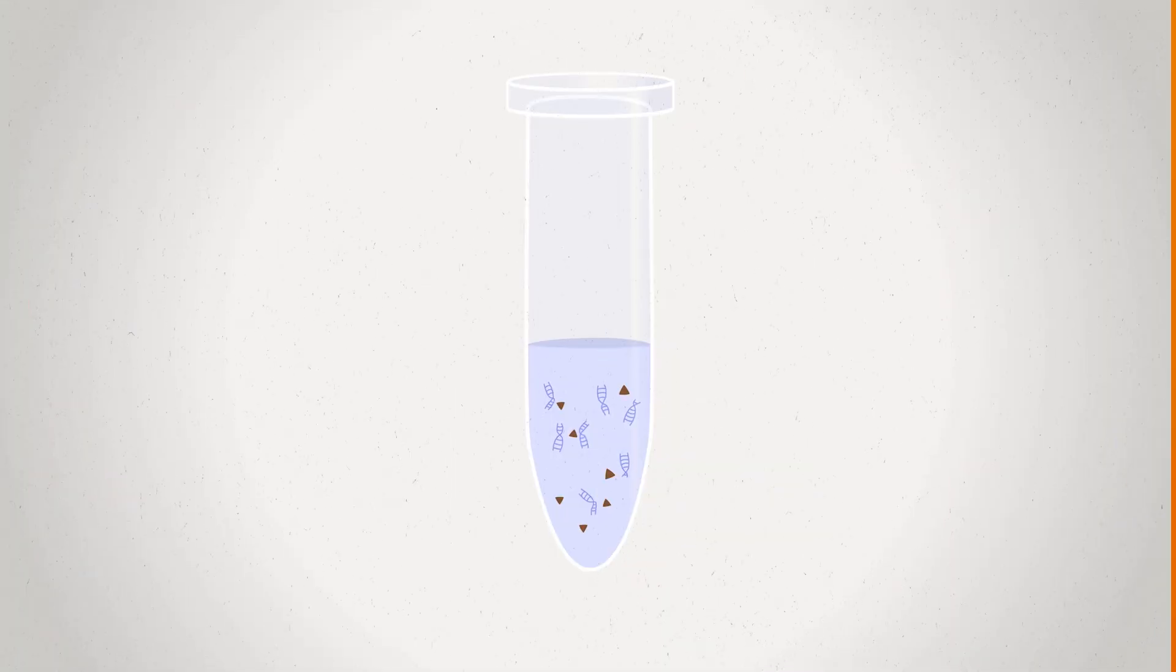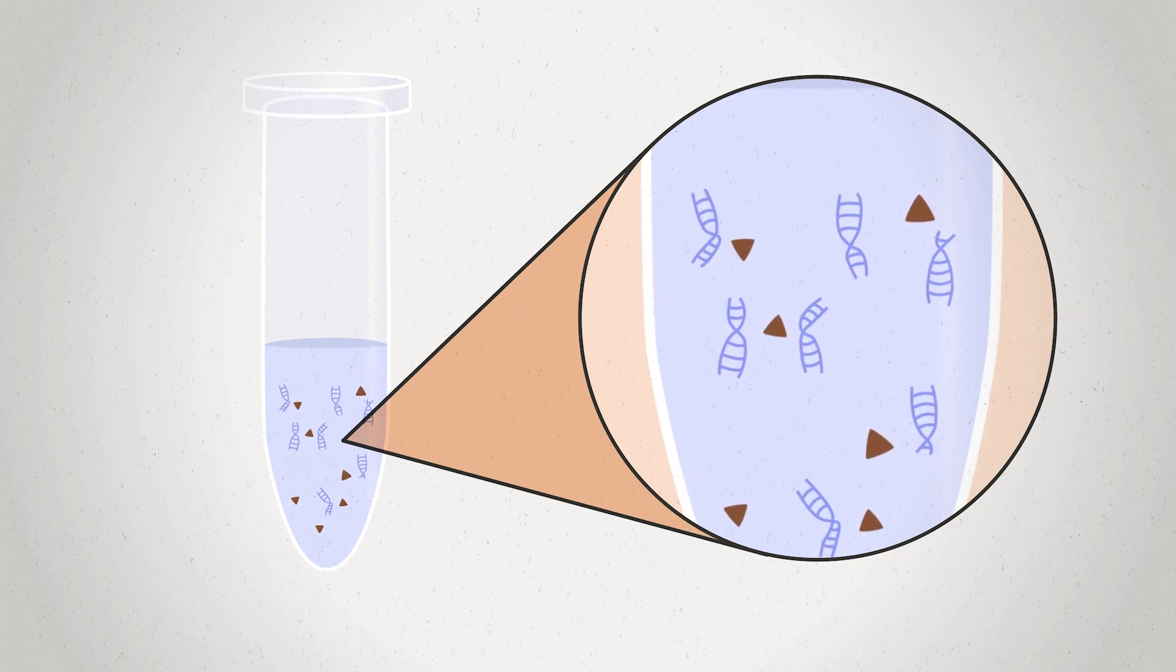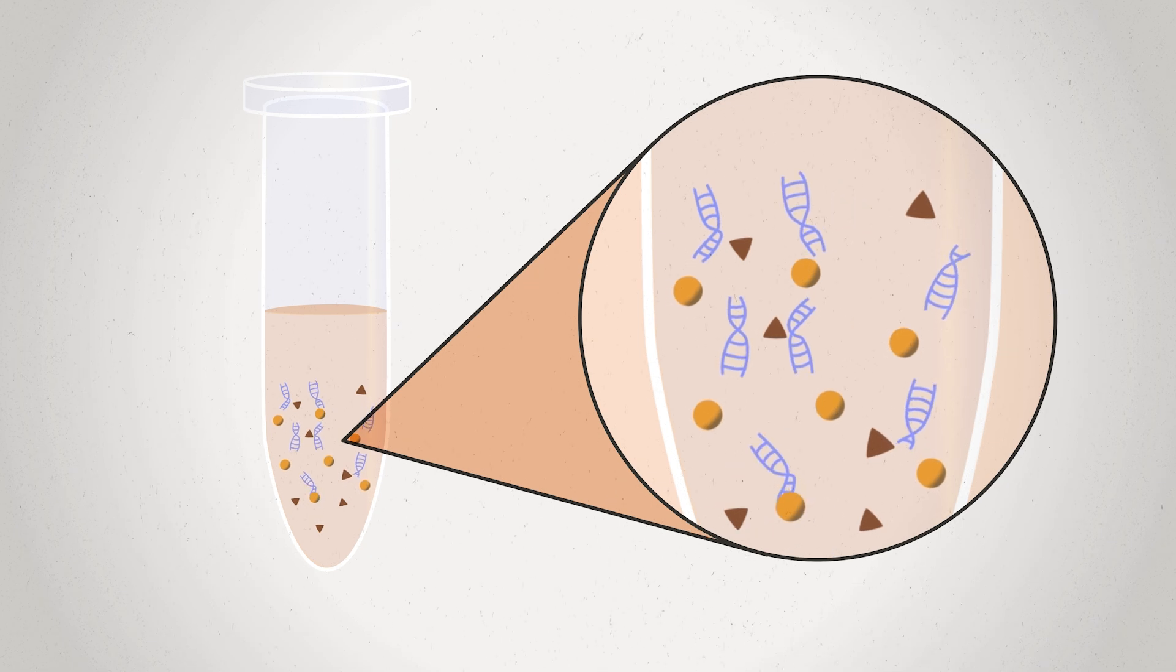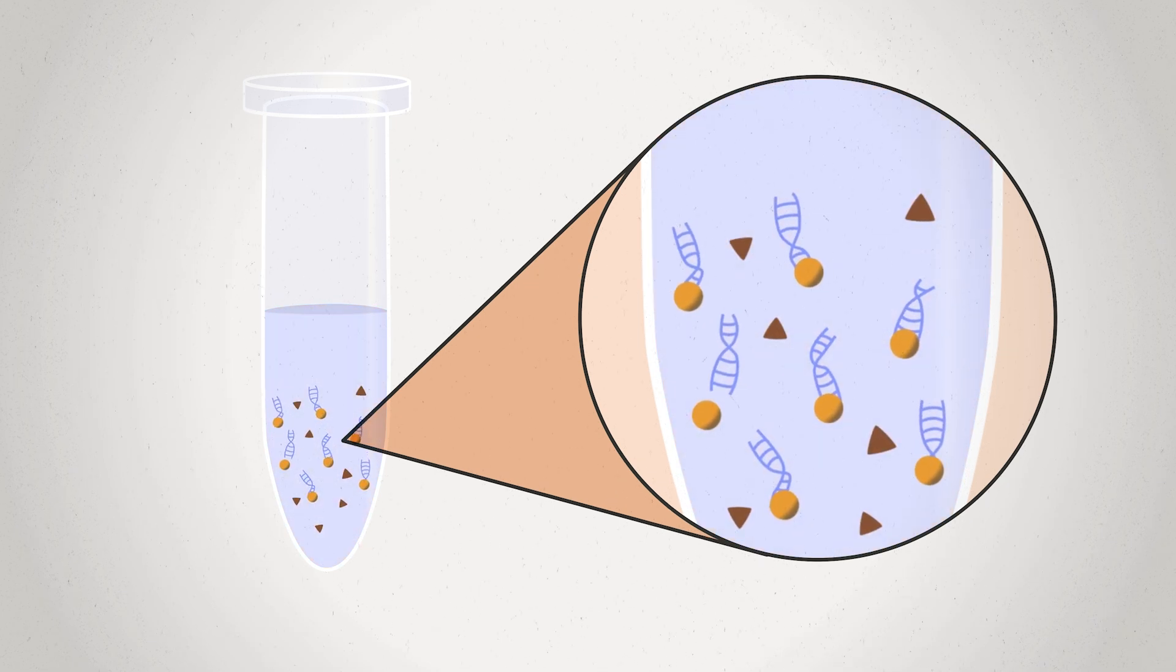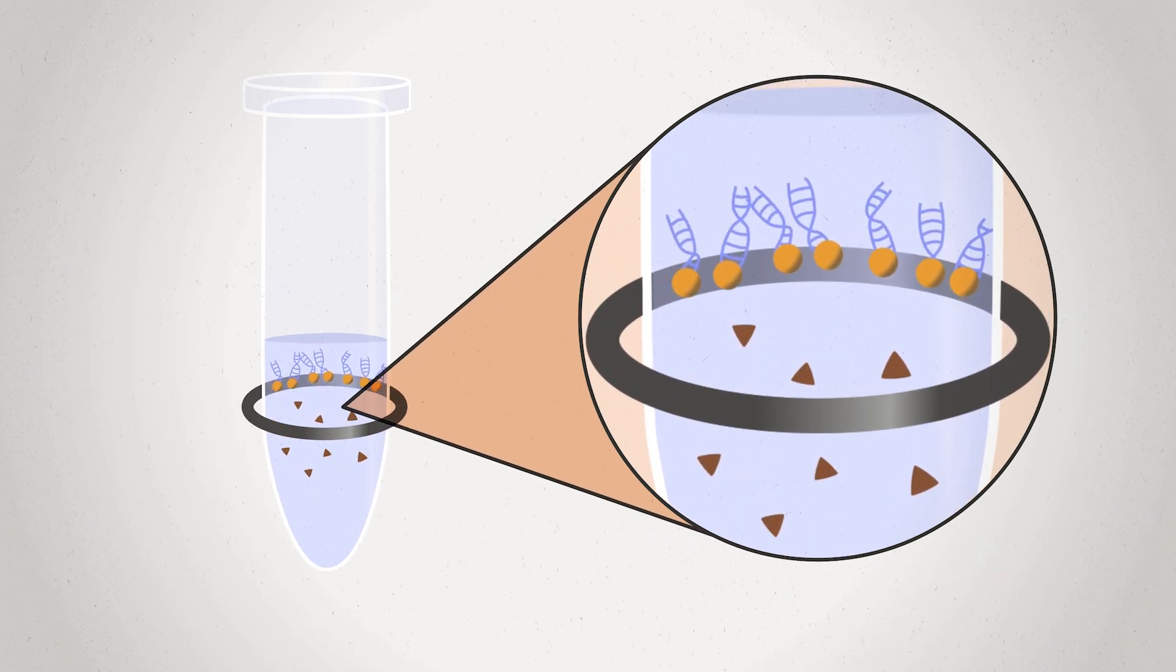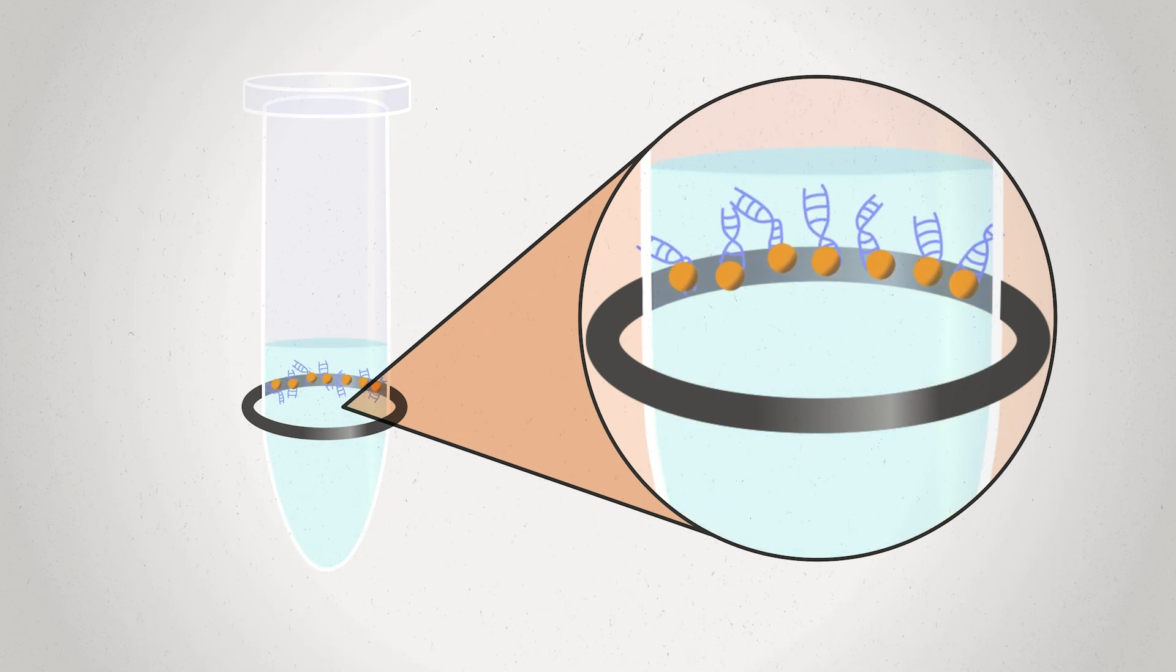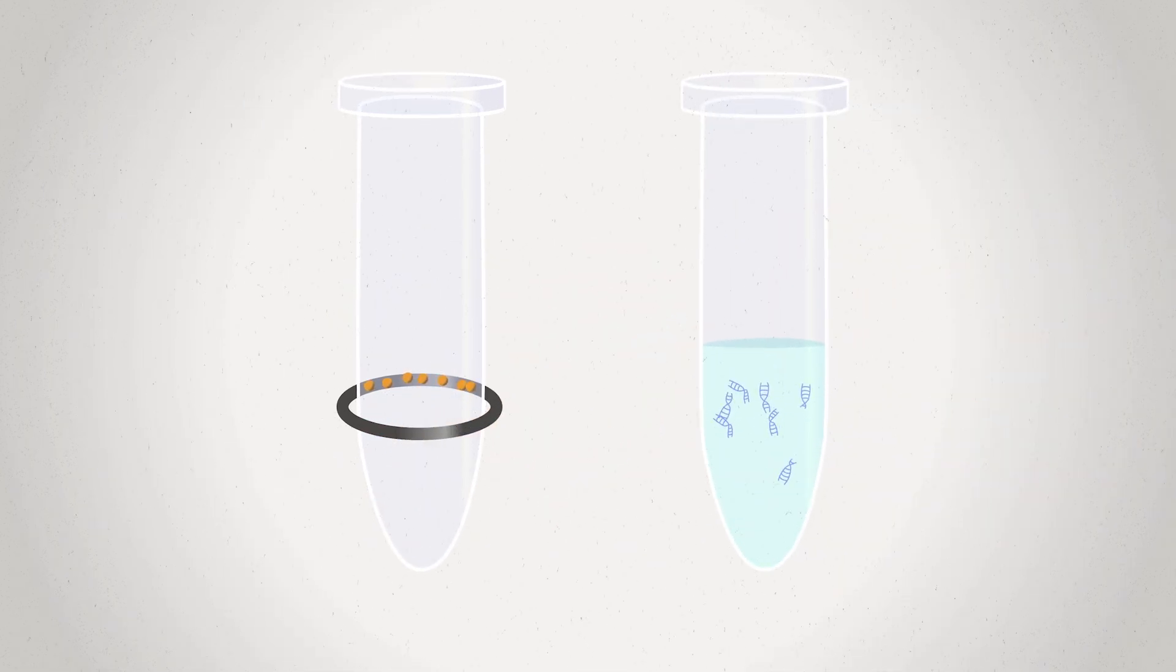Illumina purification beads are magnetic beads that selectively and reversibly bind indexed libraries. Simply put, libraries bind to beads and are pulled out of solution with a magnetic plate. Used molecules and enzymes remain in solution and are washed away. Purified libraries are then eluded from the beads and transferred to a new tube. This method of library prep cleanup provides predictable, efficient, and consistent selection of correctly sized libraries.